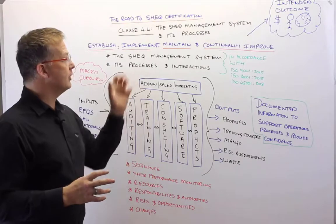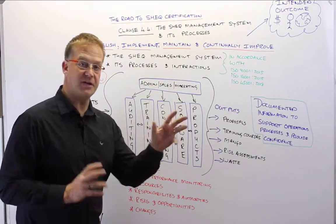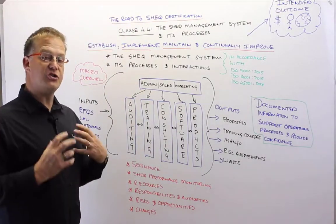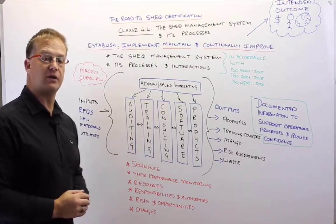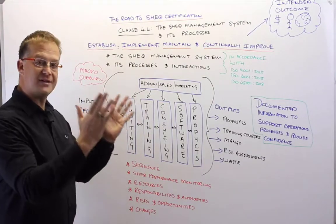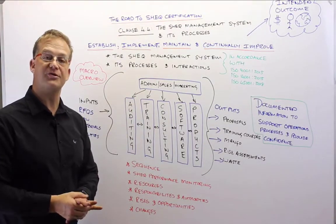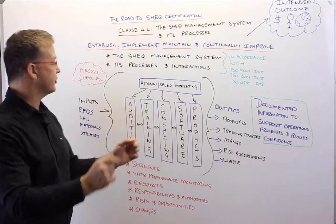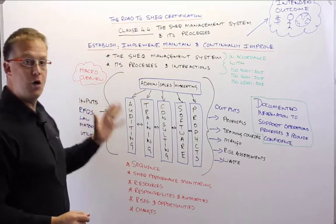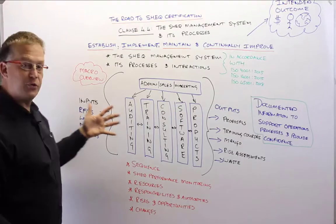But in short, when looking at the check management system, its processes and interactions, generally our approach to this particular clause would be to create an interrelationship of processes diagram which describes in a macro overview the inputs to the organization.